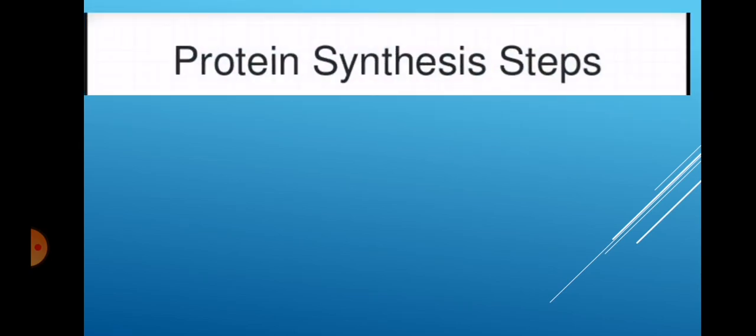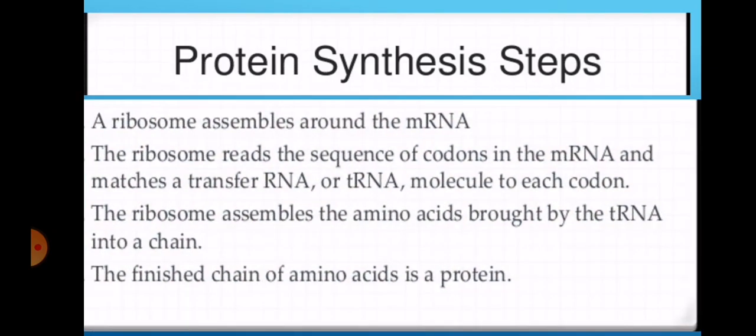Protein synthesis steps shortly. In short, we can say a ribosome assembles around the messenger RNA. The ribosome reads the sequence of codons in the mRNA and matches transfer RNA molecules to each codon. The ribosome assembles the amino acids brought by the tRNA into a chain. The finished chain of amino acids is a protein.